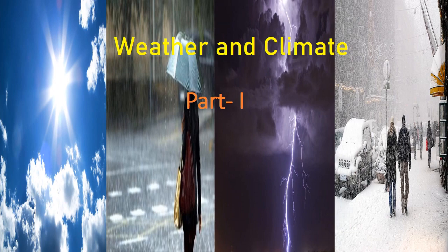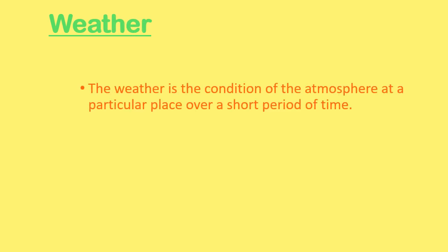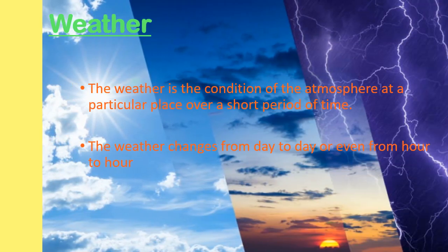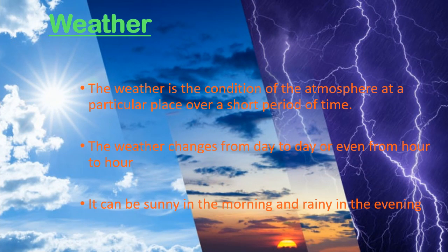Weather and Climate. Weather is the condition of the atmosphere at a particular place over a short period of time. The weather changes from day to day or even from hour to hour. It can be sunny in the morning and rainy in the evening.